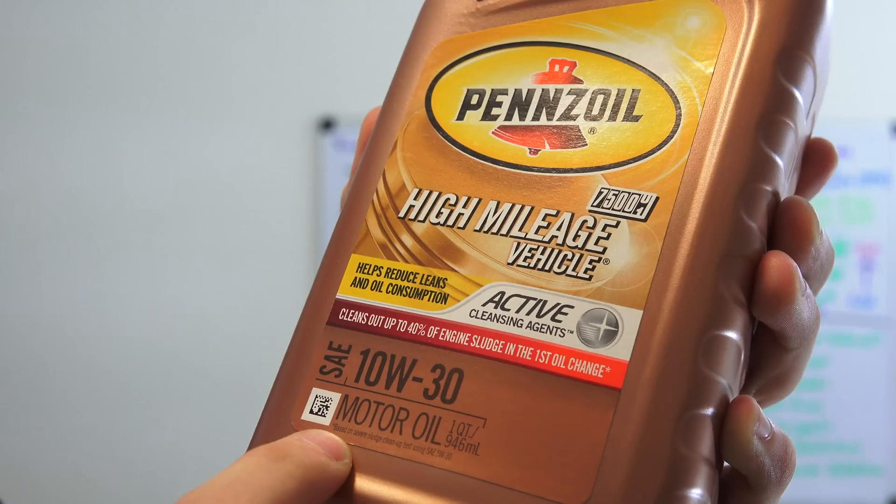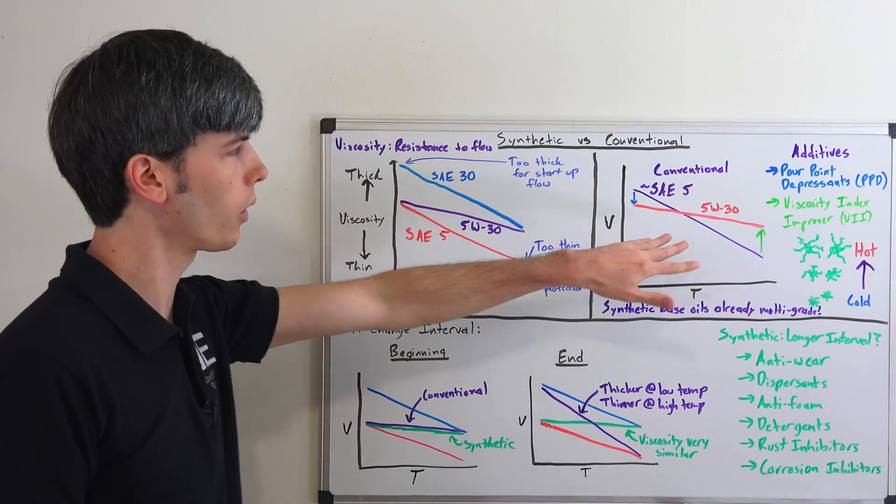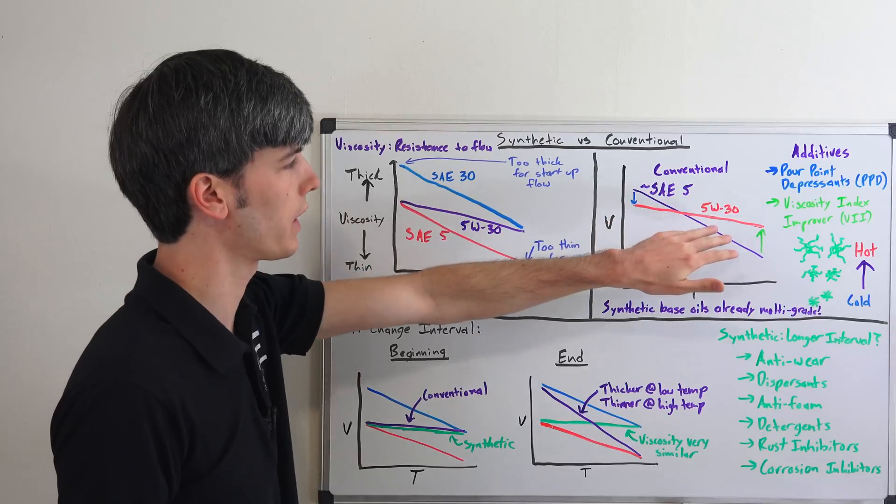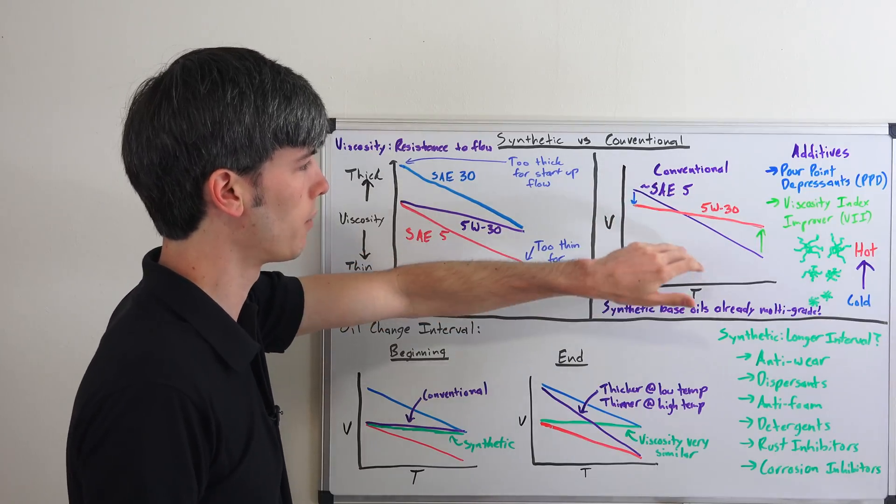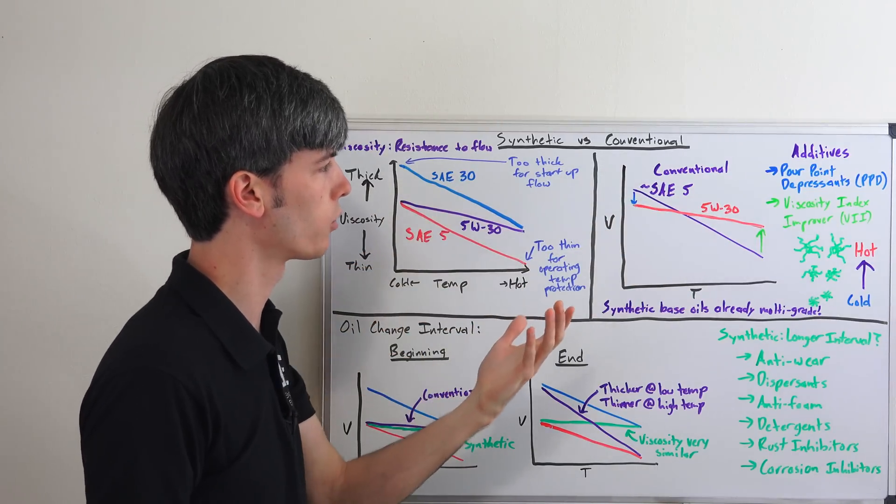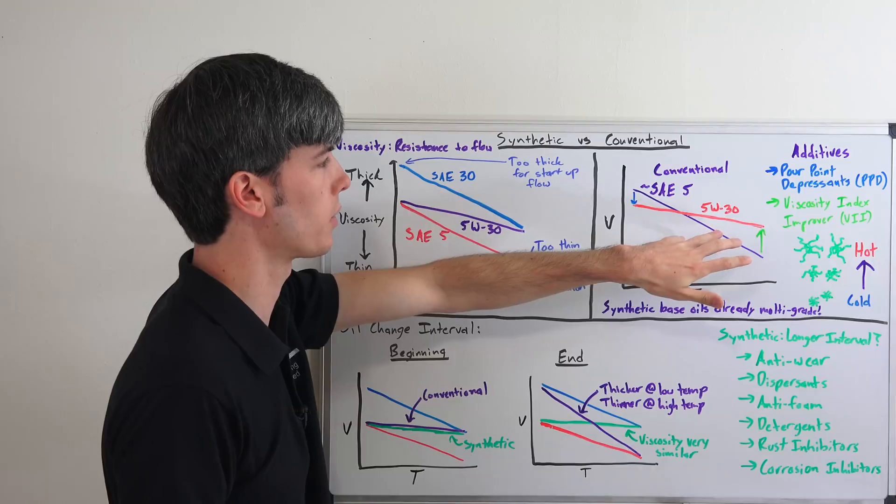So how would you create a multi-grade conventional motor oil? Well you're going to start with something similar. Let's say we're making a 5W30. You're going to start with something similar to a straight grade SAE 5 motor oil and then you're going to have additives which you add to this in order to give it those 5W30 characteristics.